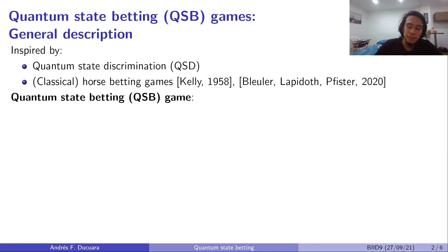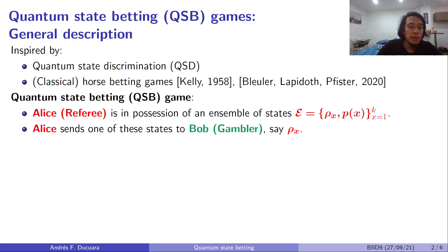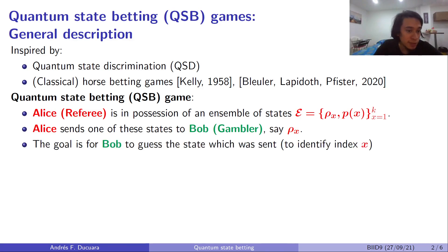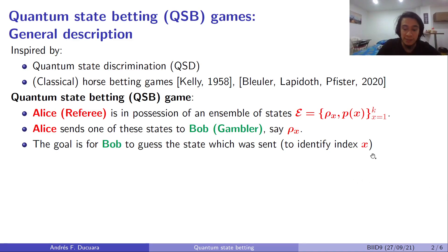Quantum state betting can be seen as a game played by Alice and Bob. Alice, the referee, is in possession of an ensemble of states. Alice is going to send one of these states to Bob, the gambler — let's say row x. Then, the goal for Bob is going to be to guess, to identify which one of these states was sent, or equivalently to identify the index x.